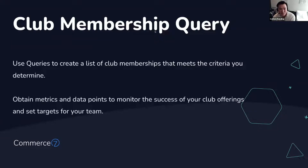The club membership query feature is a feature that you can use to create a list of club memberships that meets the criteria that you determine and configure. By doing so, you can obtain metrics and data points to help monitor the success and health of your club offerings, set targets for your team, things like KPIs with the data that you extract. In this presentation, I'm going to show you some ways to extract information from your club memberships and come up with reports and targets for your team.